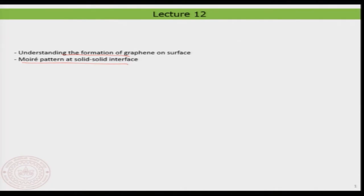You have already seen when we looked into the high resolution images of graphene formed on a platinum 111 surface that there are also formations of super lattices, which is typically known as the moiré pattern. We will have a look at that and try to understand a few important aspects about the moiré pattern itself, because it is something you will always come across at interfaces and is a good indicator for understanding important things at the interface.